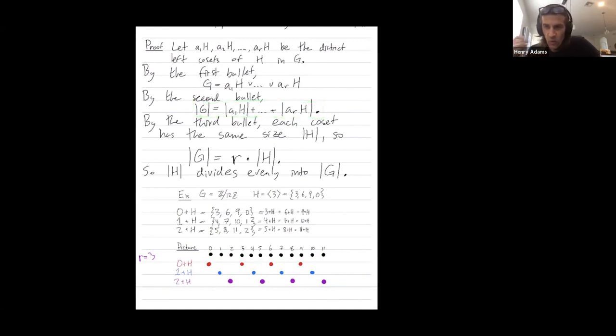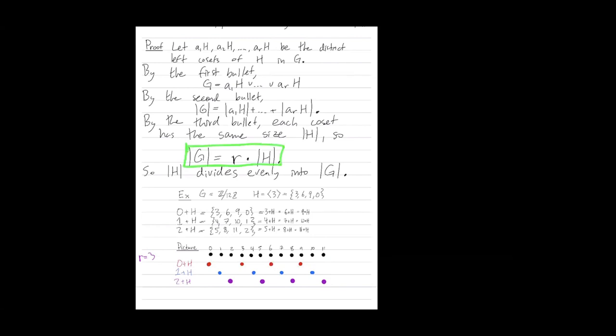And then one last part we know about cosets is that they all have the same size. They all have size 4 in this example. So the size of the group is the number of cosets, 3, times the size of each coset, which is 4.